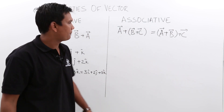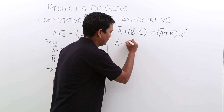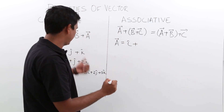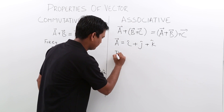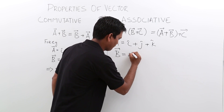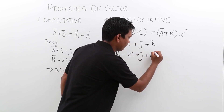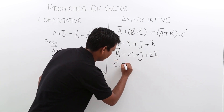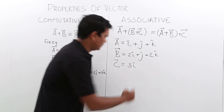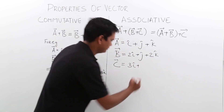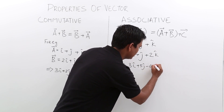Let us understand this by an example. Assume A vector equals i cap plus j cap plus k cap. B vector equals 2i plus j plus 2k. We will randomly take some C vector — let us say 3i plus 5j minus 6k cap.